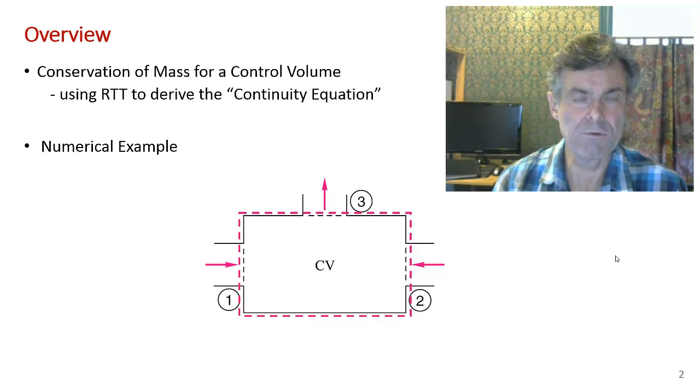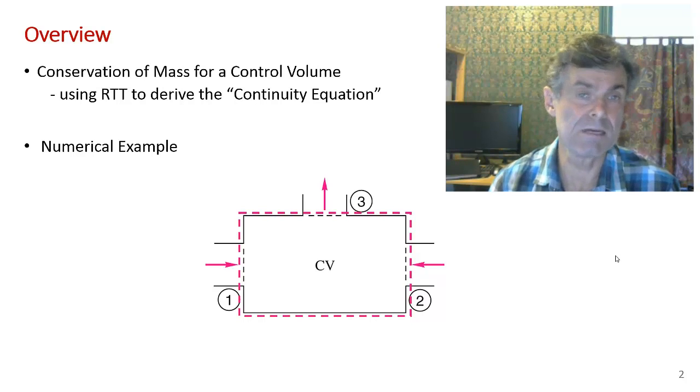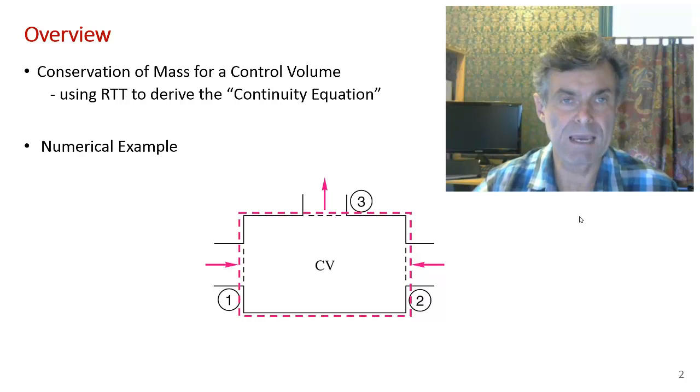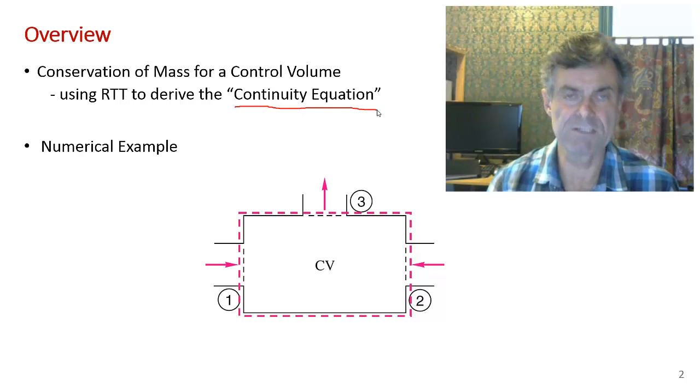In the previous video, we talked at great length about Reynolds transport theorem, which allows us to convert a system analysis to a control volume analysis. What we're going to do now is use Reynolds transport theorem to derive the conservation of mass equation for a control volume. In fluid mechanics, the conservation of mass equation is usually referred to as the continuity equation. Conservation of mass and continuity equation mean the same thing. Then we're going to do a very simple numerical example.